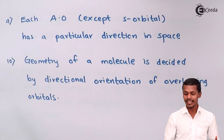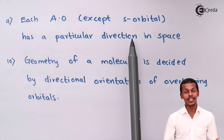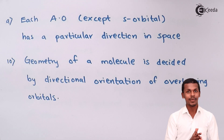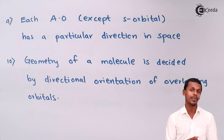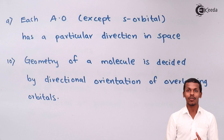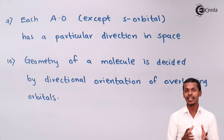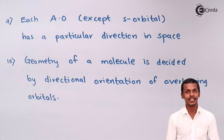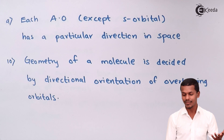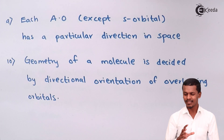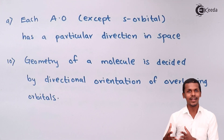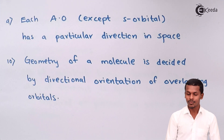The ninth postulate says: each atomic orbital, except the s orbital, has a particular direction in space. The s orbital has a spherical shape and no particular direction. The p orbitals have a dumbbell shape and are divided into px, py, and pz orbitals. The d and f orbitals also have particular shapes and directions. Since s orbitals have no direction, valence bond theory is basically related to the directional orbitals — p, d, and f — each of which has its own axis of direction.